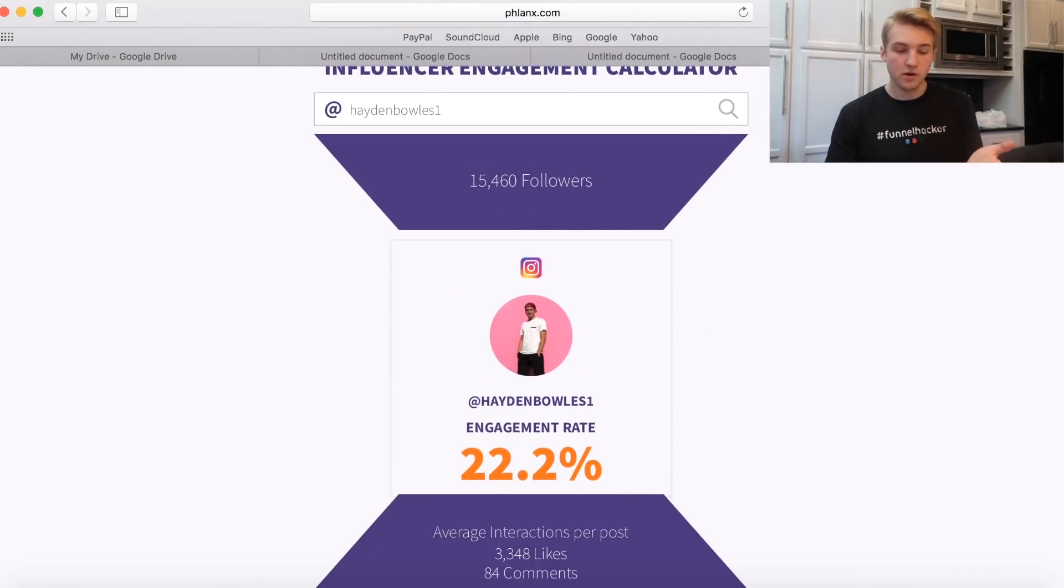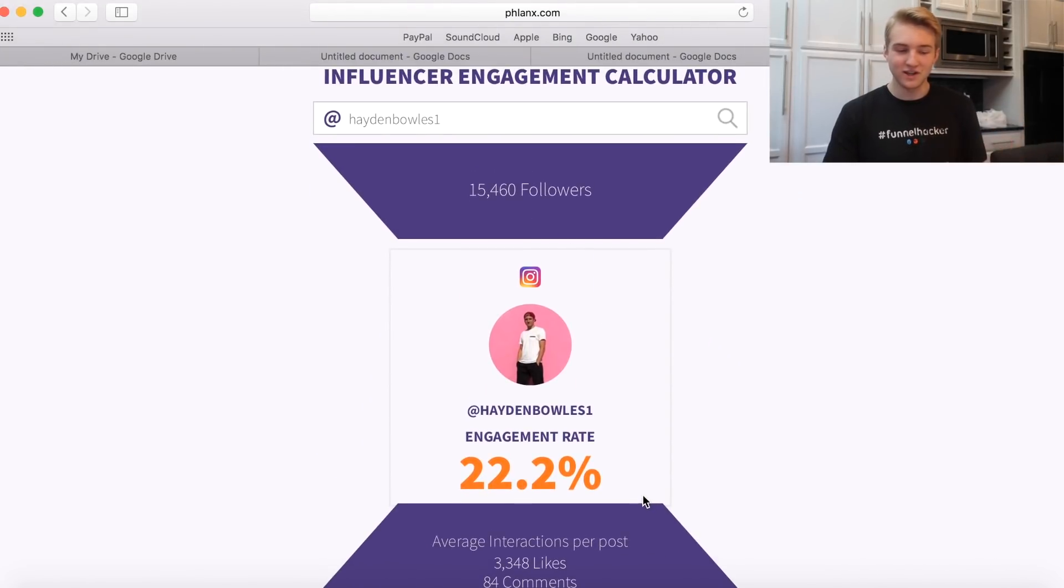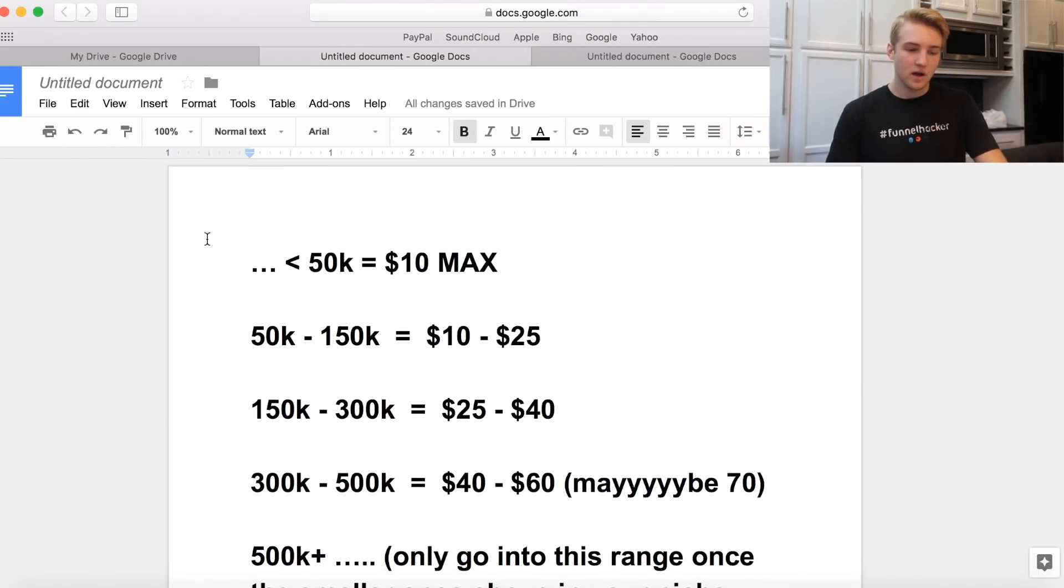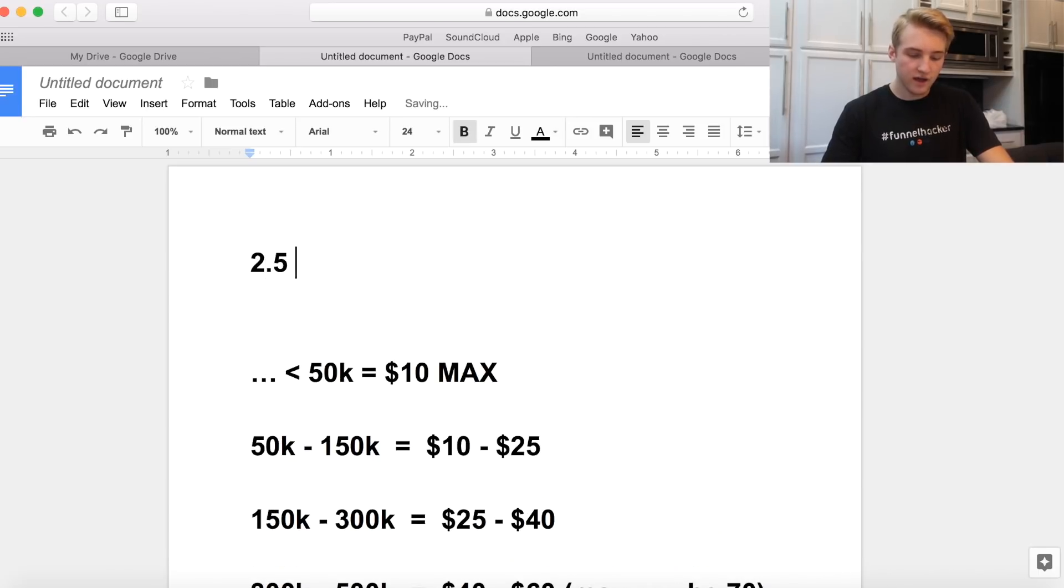It's going to pull up and show you the followers and the engagement rate on average. It shows you the overall average, which is huge. As you can see, I'm a freaking boss when it comes to social media, so 22%. That's insane. I usually look for influencer pages between 2.5% and 5%.